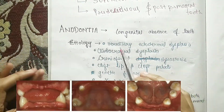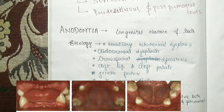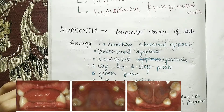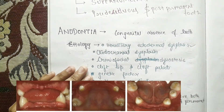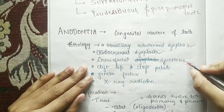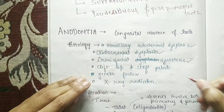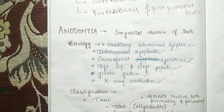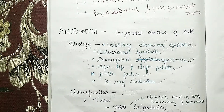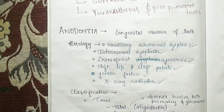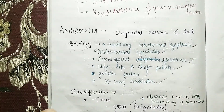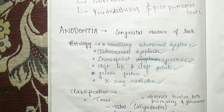The etiology of anodontia is hereditary ectodermal dysplasia, cleidocranial dysplasia, craniofacial conditions, cleft lip and cleft palate, genetic factors, and sometimes x-ray radiation — because x-ray radiation is dangerous as it can cause cancer chances.